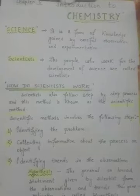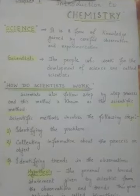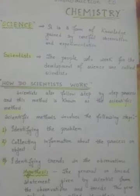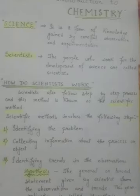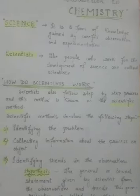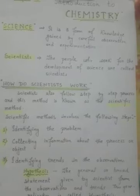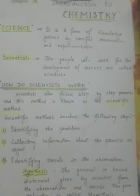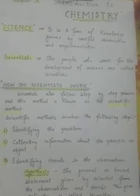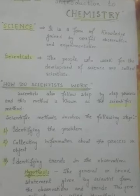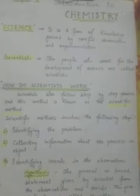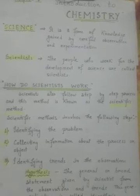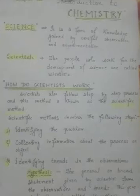Next, who are scientists? People who work for the development of science are called scientists. Those people who are constantly working for developing different theories and different ideas of science are called scientists.